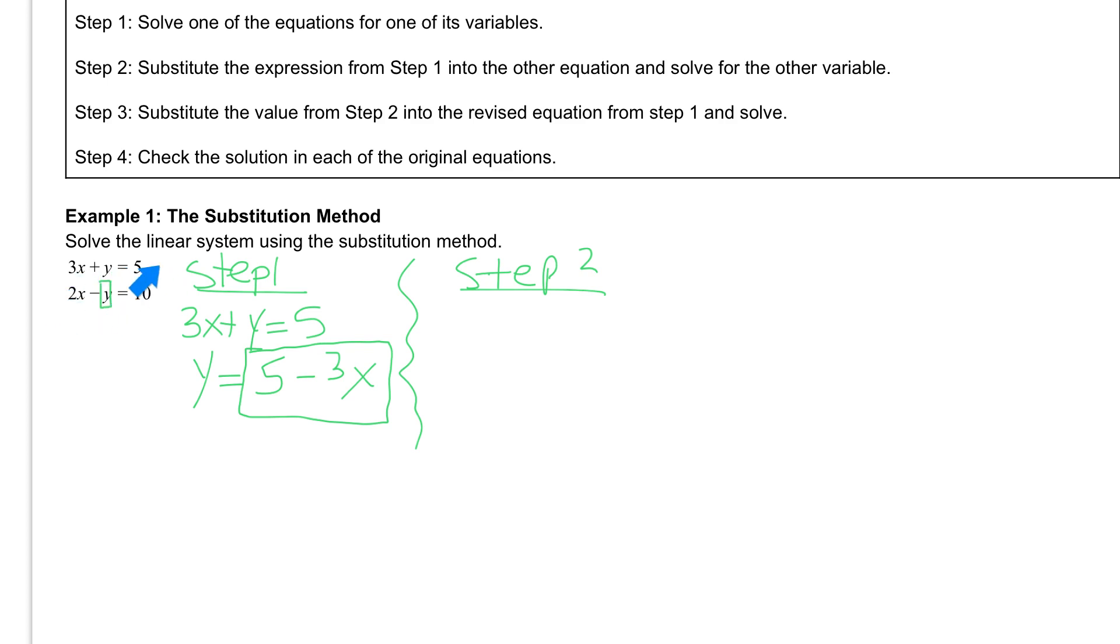So I'm going to rewrite this bottom equation and switch what's in the box. Start with my 2x. I still have my minus sign. That needs to stay here. And then I'm going to draw my box. And instead of putting the y inside that box, I'm going to replace it with what I had in step one, which is 5 minus 3x. And then I continue. I still have my equal sign after the box, and I still have the 10. So once again, everything's the same here as it is here, except we've changed the y with what y is equal to from step one.